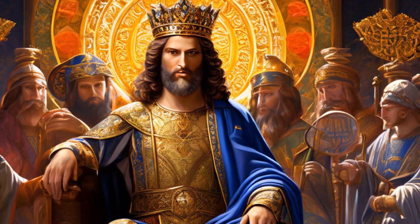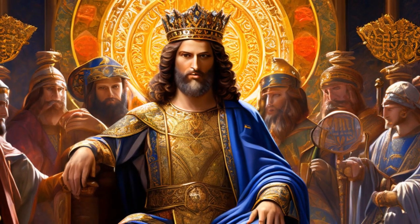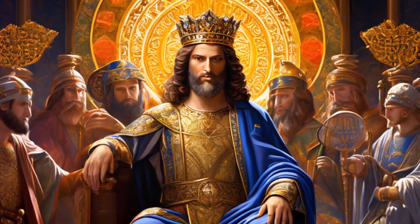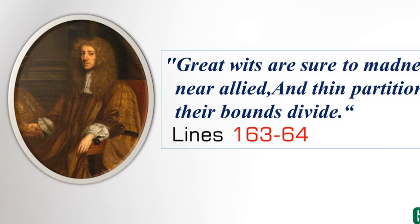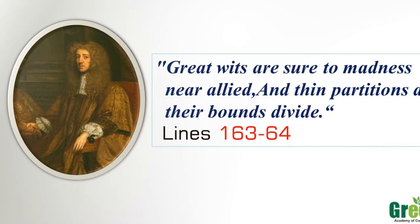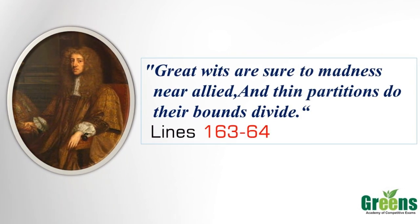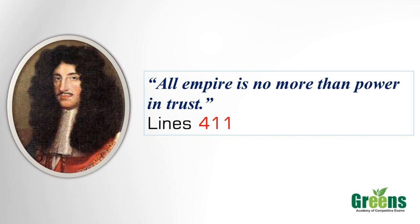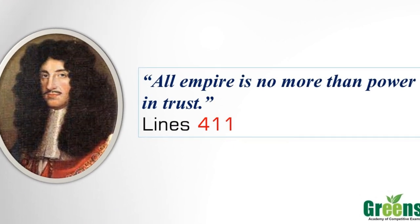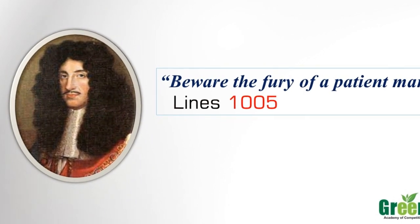Some famous lines from Absalom and Achitophel include: 'Great wits are sure to madness near allied' — Dryden says true genius often comes from a mind that refuses to obey conventional logic, and this is a clear attack on Achitophel, who represents the Earl of Shaftesbury. Other popular lines are: 'All empire is no more than power in trust,' 'Nor is the people's judgment always true,' and 'Beware the fury of a patient man' — representing King Charles II watching quietly during the Exclusion Crisis.